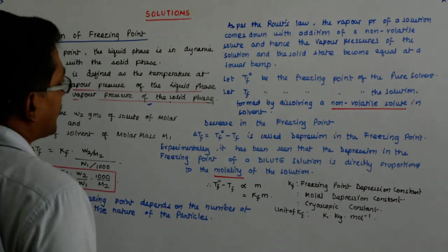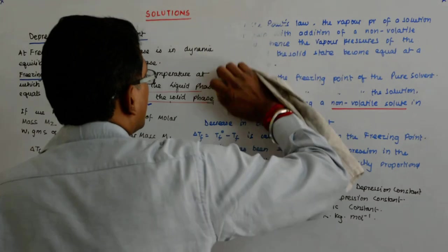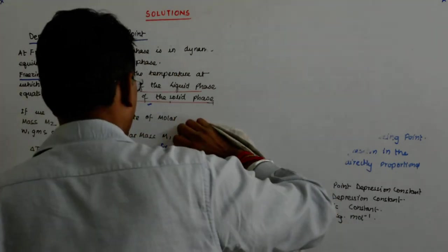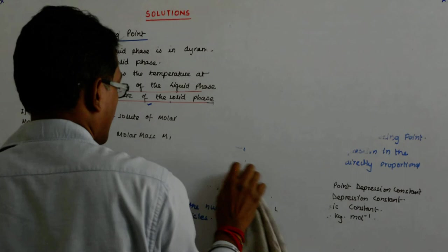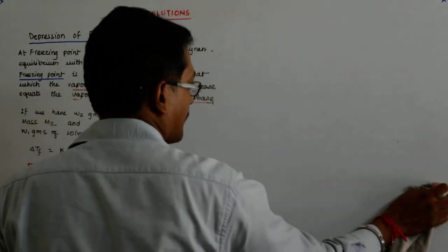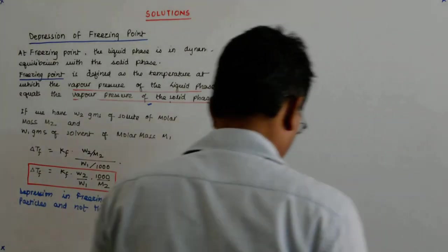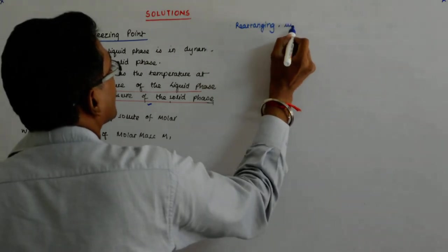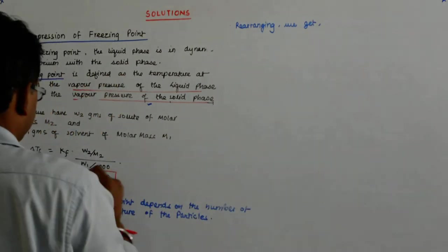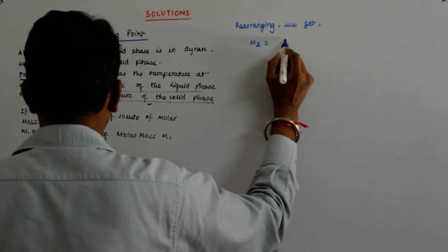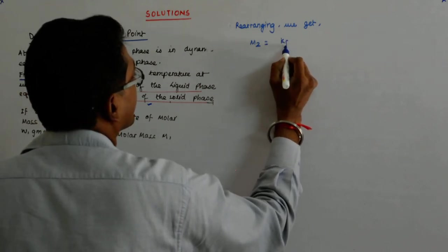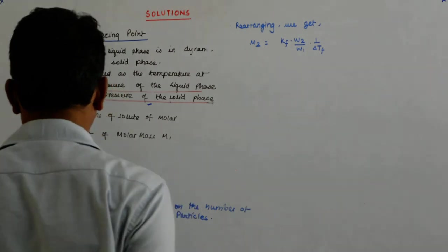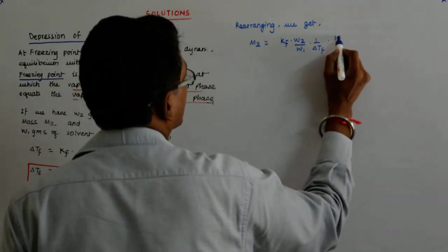So we rearrange the equation. Rearranging, we get M2 equals Kf times W2 by W1 times 1 by delta Tf times 1000.